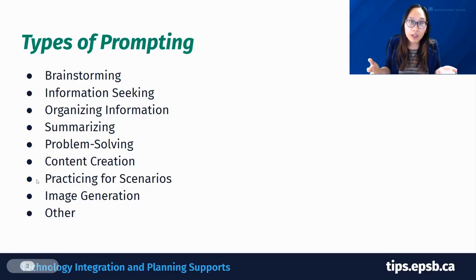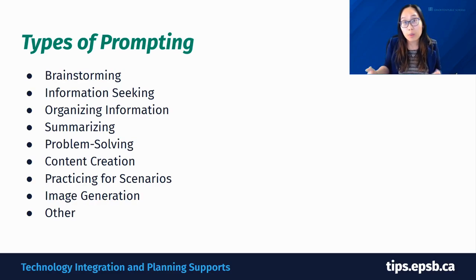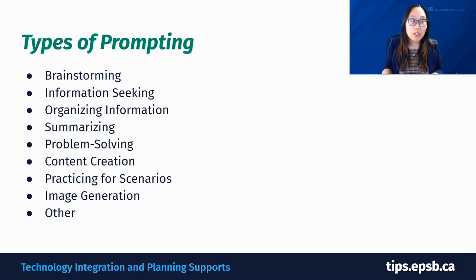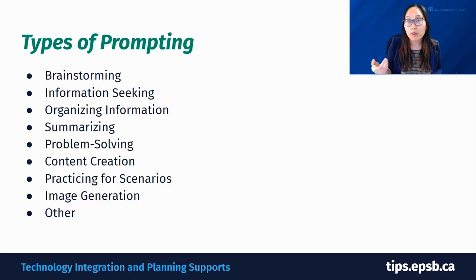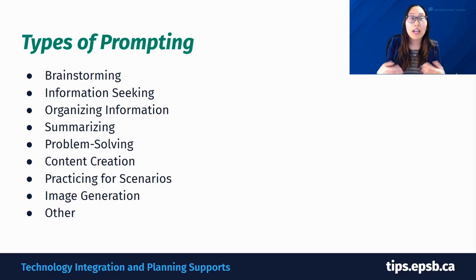So if you're here, you might be asking yourself: how do I start with AI? What can I do with an AI chatbot? When we look at generative AI and use Google Gemini as an example, there's lots of different things you can do. Types of prompting include brainstorming, information seeking, organizing, summarizing, problem solving, content creation, practicing for scenarios, generating images, and more.